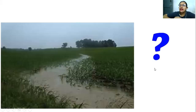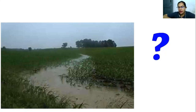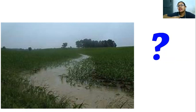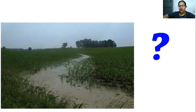What will happen if there is too much rain — what will happen to the paddy field? If there is excessive rain, the crop will be destroyed. All the water molecules will be locked and the paddy field will not be able to grow further.